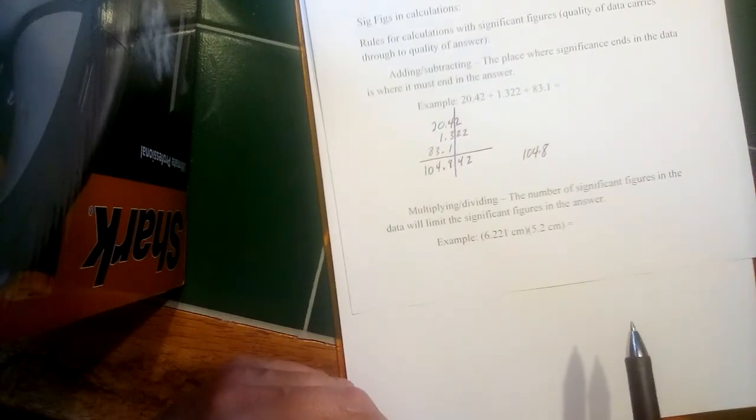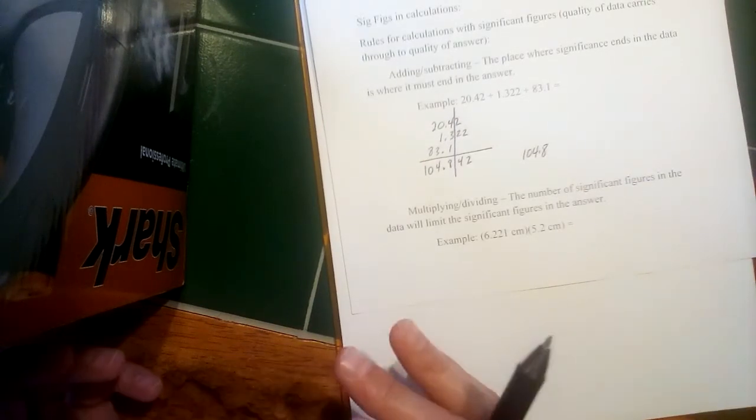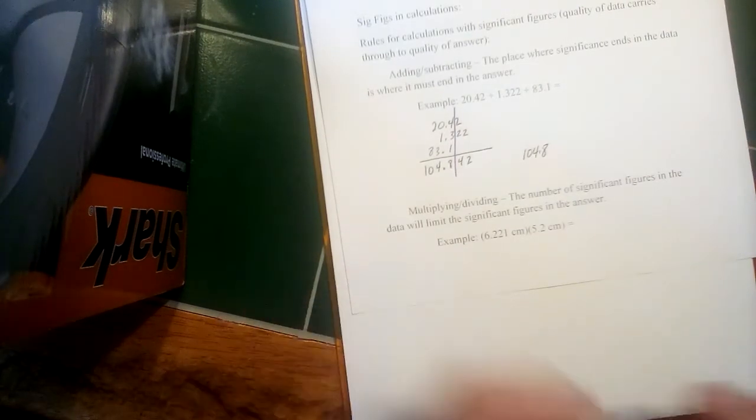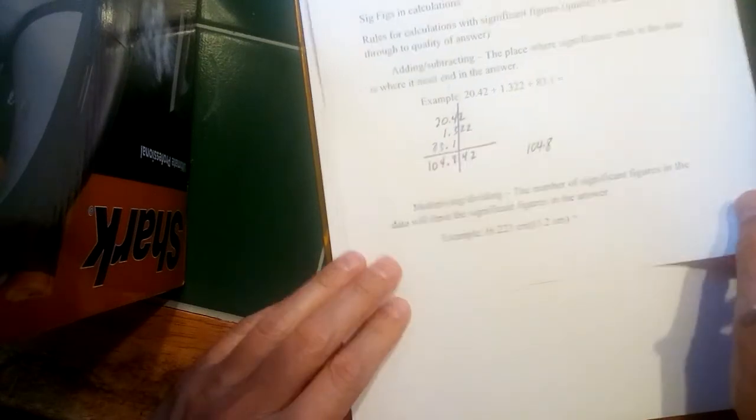When you subtract, just the opposite is possible. You will lose some of the significant figures to the left. If you subtract two numbers that are pretty close, you get a small value. You may actually end up with quite a few fewer significant figures after a subtraction.